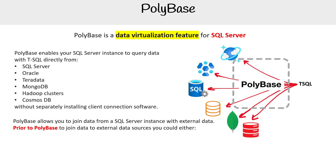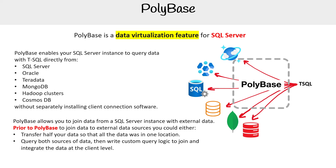Prior to PolyBase, to join data to external data sources, you could either transfer half your data so that all the data was in one location, or query both sources of data, then write custom query logic to join and integrate the data at the client level.